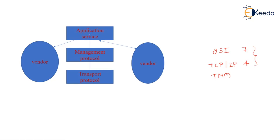Vendors can communicate directly with application service and also transmit data towards other vendors, so the direction is bidirectional. Transport layer transmits to management protocol, which transmits to application service, each performing their respective layer functions. This is the deep architecture of the network management system.